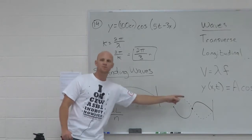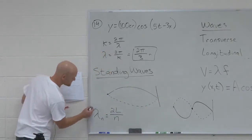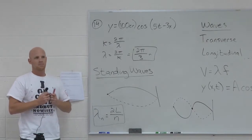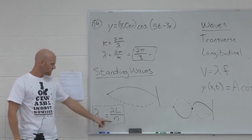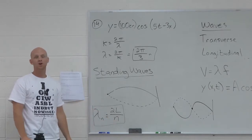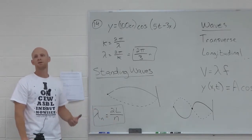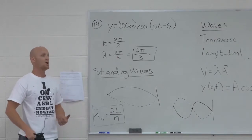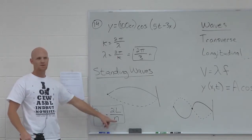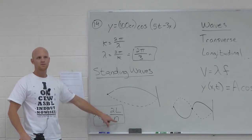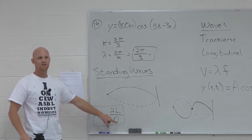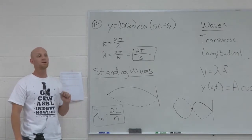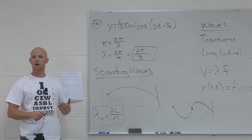N can only take on integer values. When you plug in N equals 1, we call that the first harmonic. N equals 2 is the second harmonic. N equals 3 is the third harmonic, and so on. N equals 1 is also called the fundamental frequency, if we're talking about the frequency.